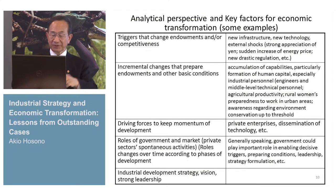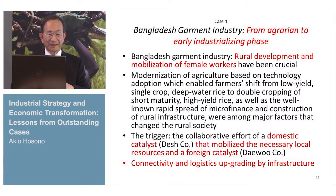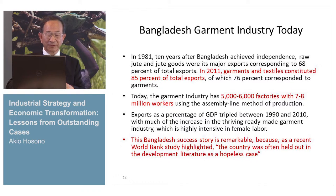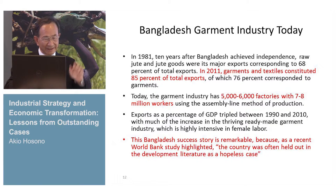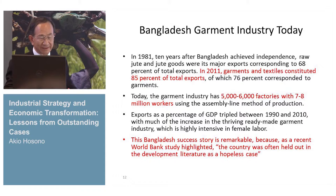Let me start with Bangladesh — the garment industry — from an agrarian and early industrialization phase. The most important point was that rural development and mobilization of female workers have been crucial. In 1981, ten years after Bangladesh achieved independence, jute and jute goods were major exports, corresponding to 68%. By 2011, only 30 years later, garments and textiles constituted 85% of total exports. Today the garment industry has 5,000 to 6,000 factories with 7 to 8 million workers. This Bangladesh success story is remarkable.